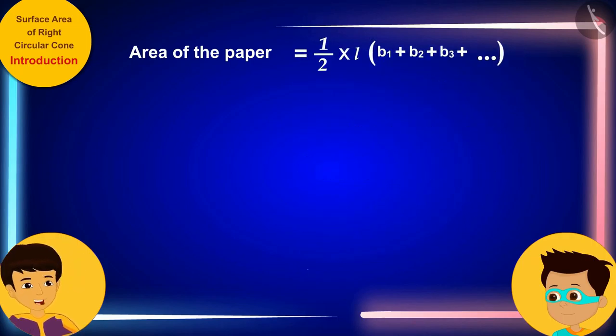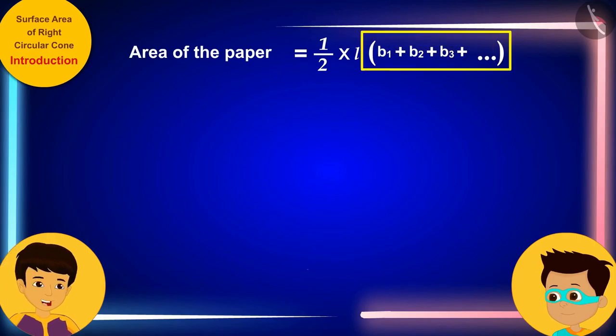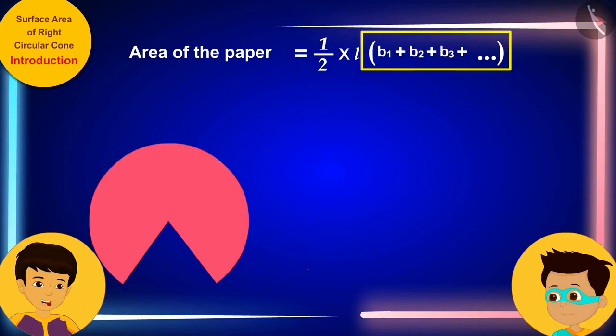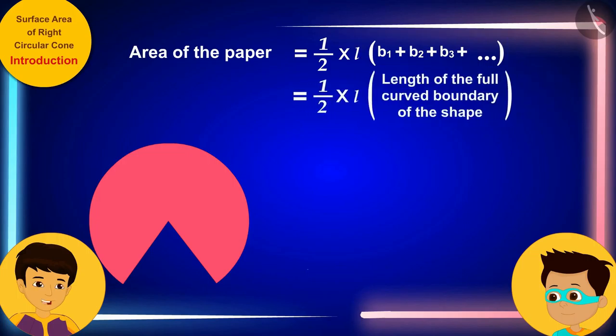But Thomas, B1, B2, B3, etc. together make up the outer part of this shape. So, the sum of all these will be equal to the length of the curved boundary of this shape.